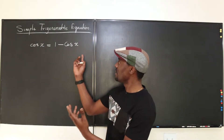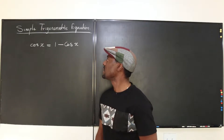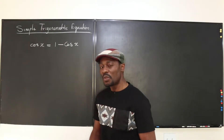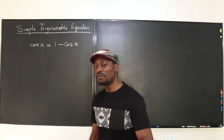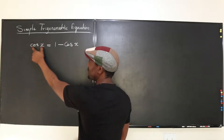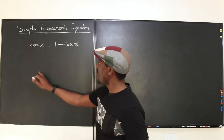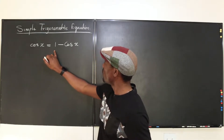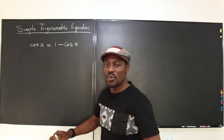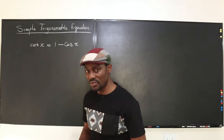So this is the first equation that we have: the cosine of x equals one minus x. The first thing you want to do is treat this as a term — like writing it as y. So you can have something like y equals one minus y, and then you can solve it just the way you would solve a regular simple linear equation.